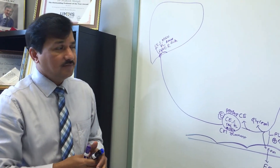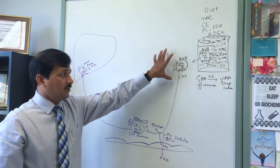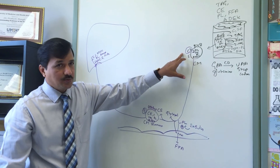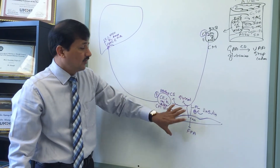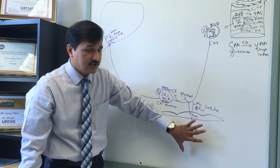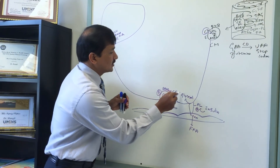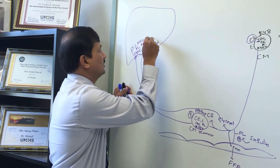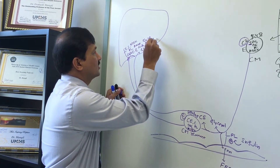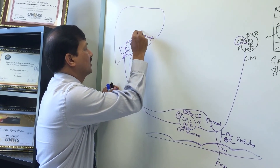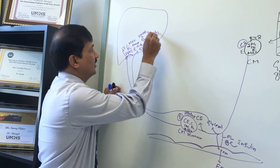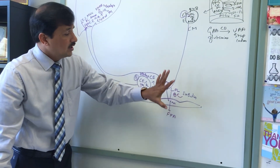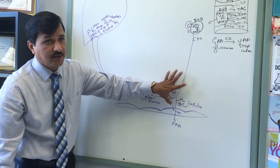In summary for chylomicron metabolism: chylomicrons are formed in the intestine, matured in circulation by gaining ApoC2 and ApoE from HDL, then lipoprotein lipase (activated by ApoC2) degrades triacylglycerol into free fatty acids and glycerol. Free fatty acids are used by peripheral tissues; glycerol returns to the liver and is converted to glycerol-3-phosphate, entering triacylglycerol synthesis or glycolysis via DHAP. Insulin keeps LPL active in the well-fed state.